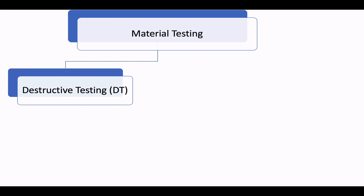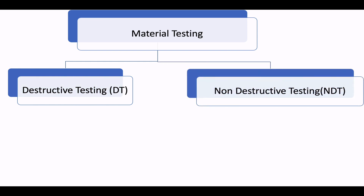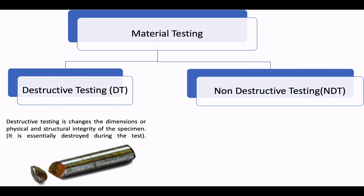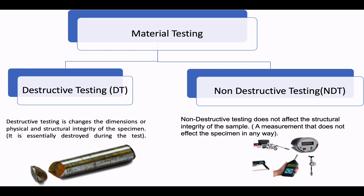Material testing also plays a large role in failure analysis investigation to help and identify defective parts. Material testing can be broadly classified into two: destructive testing and non-destructive testing. As the name indicates, destructive testing will change the dimension or physical and structural integrity of specimen in order to identify its capabilities. But in case of non-destructive testing, measurement will not affect the specimen or it will not make any changes over the physical or chemical properties of the material.